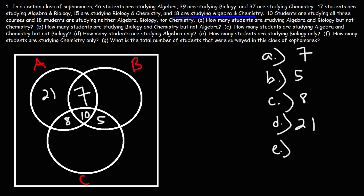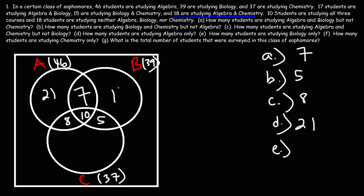Part E: how many students are studying biology only? The total number studying biology is 39. To get biology only, we subtract the three overlap values: 39 minus 7, minus 10, minus 5. That gives us 17 students who are studying biology only.